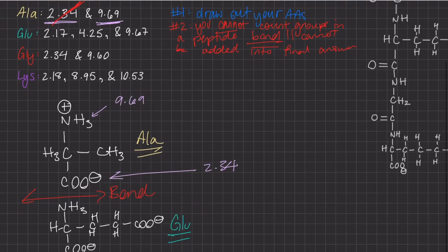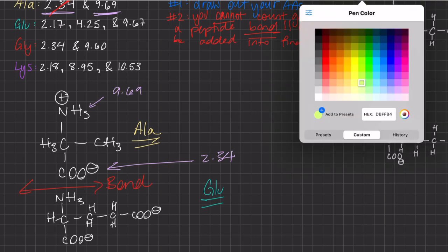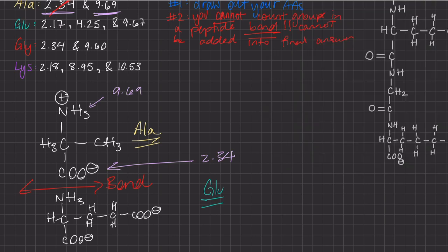Moving on, let's discuss the relationship of glutamate and its corresponding pKa's. As you can see, there are three, and the most basic one will correspond with NH3, which also cancels out due to the bonding pattern with the peptide bond.